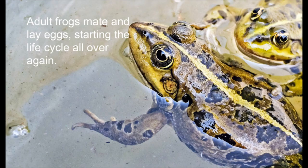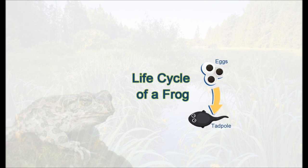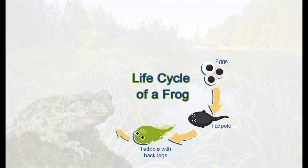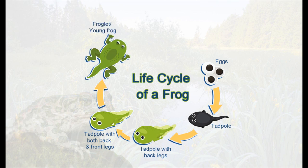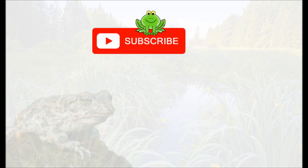Adult frogs mate and lay eggs, starting the life cycle all over again. The cycle goes: eggs, tadpole, tadpole with back legs, tadpole with both back and front legs, froglet (also known as a young frog), adult frog — and then adult frogs mate and lay eggs, starting the life cycle all over again.